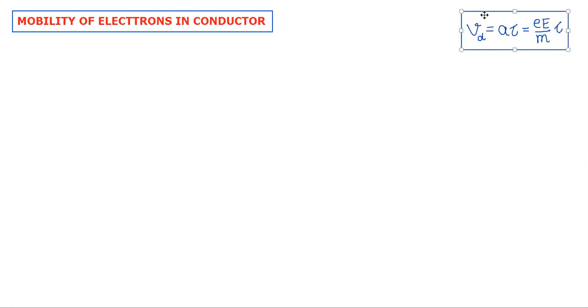VD is equal to A Tau, so E upon M into Tau. Now using this, we will understand the mobility of electrons.